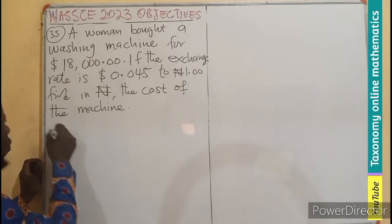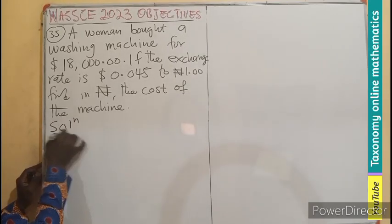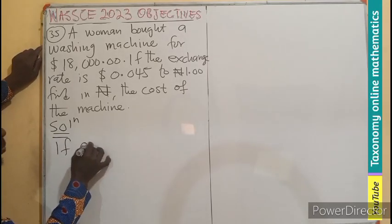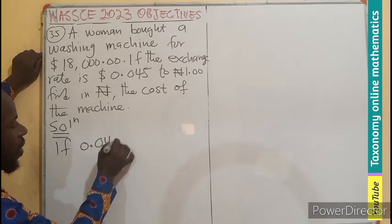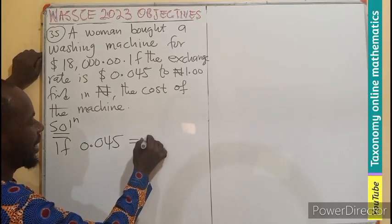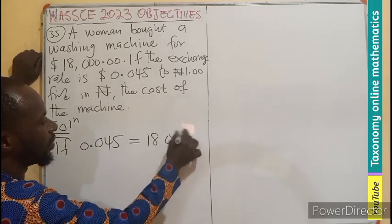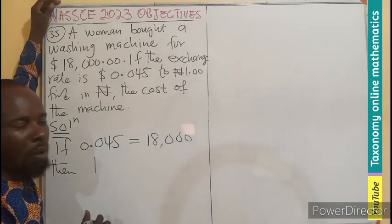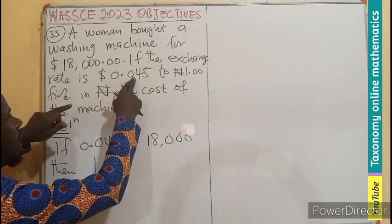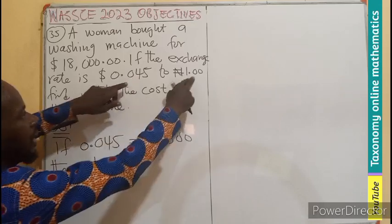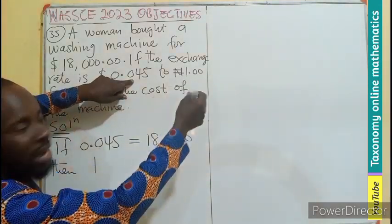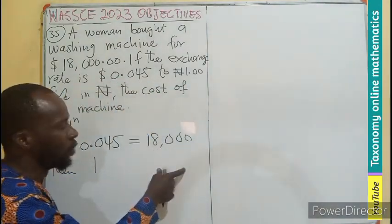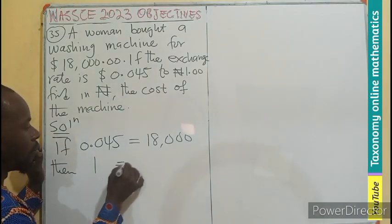We can do a simple ratio here. So I will say if 0.045 is giving me a dollar of 18,000, then I expect one to give me more. Because in comparison between this and the one dollar, one dollar is more in terms of value than this. So I expect that to have more value than 18,000. So if more,